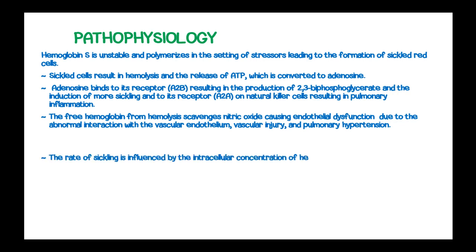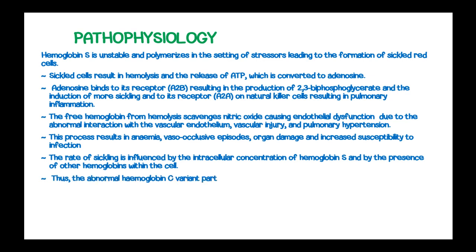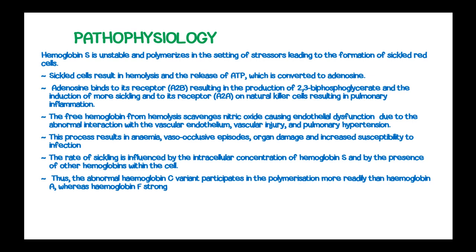The rate of sickling is influenced by the intracellular concentration of hemoglobin S and by the presence of other hemoglobins within the cell. This process results in anemia, vaso-occlusive episodes, organ damage, and increased susceptibility to infection. The abnormal hemoglobin C variant participates in polymerization more readily than hemoglobin A, whereas hemoglobin F strongly inhibits polymerization and its presence markedly retards sickling.